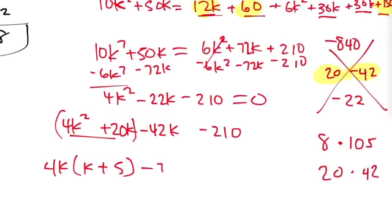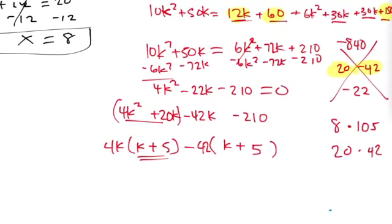Factor out a negative, that could be a big one, 7. You get 8k plus 30, no, 7 times 6, 6k, 42. Oh, I can factor out a 6, so basically I can factor out a 42. Then I get k plus 5. 4k minus 42, okay.